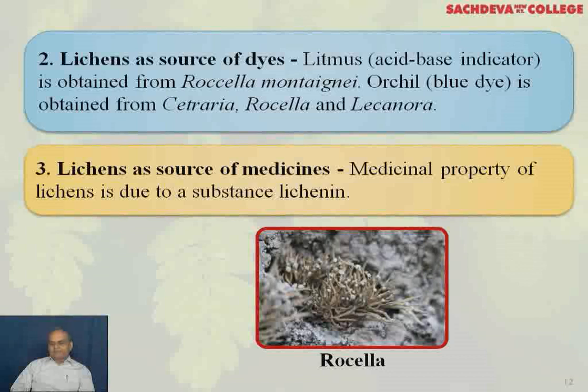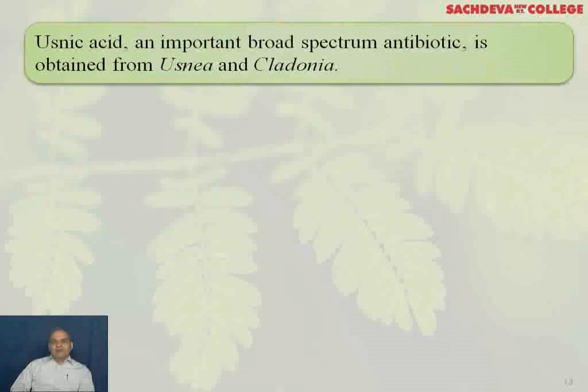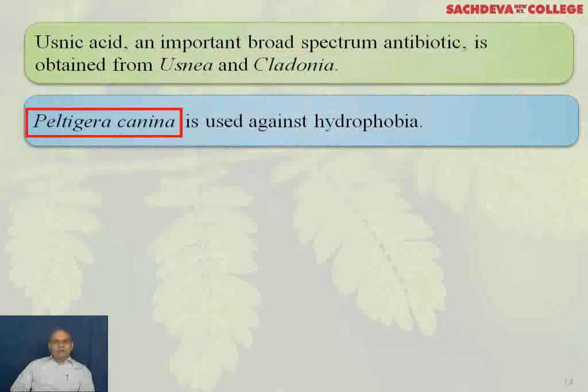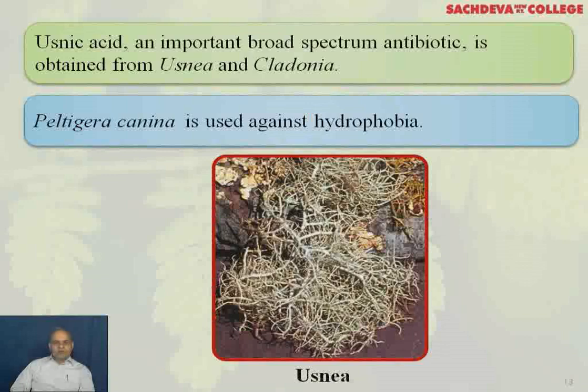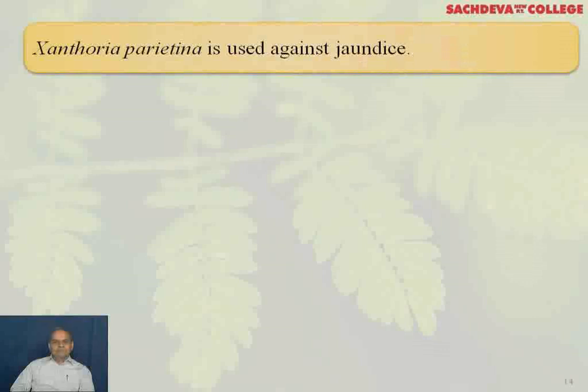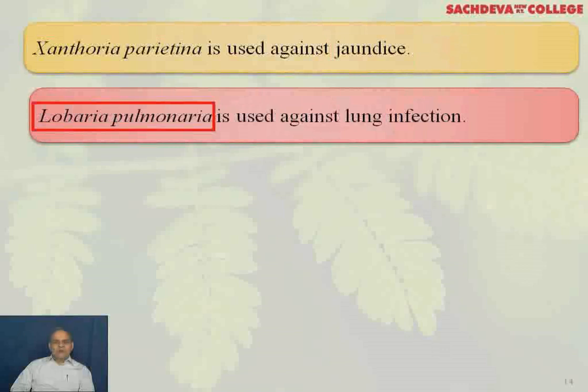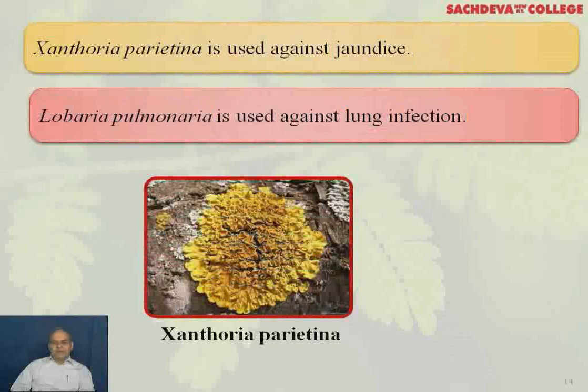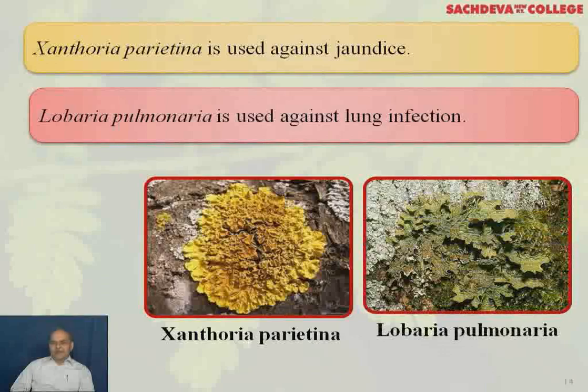Lichens are a source of medicine. The medicinal property of lichens is due to a substance called lichenin. Usnic acid, an important broad-spectrum antibiotic, is obtained from Usnea and Cladonia. Peltigera canina is used against hydrophobia, also known as rabies, which is a viral disease. Xanthoria parietina is used against jaundice. Lobaria pulmonaria is used against lung infection.